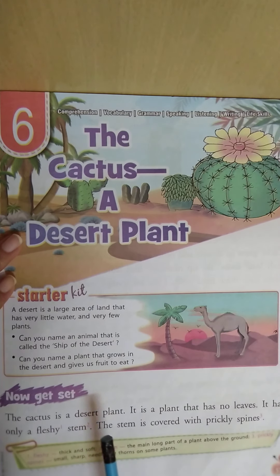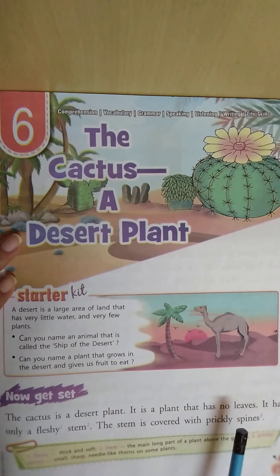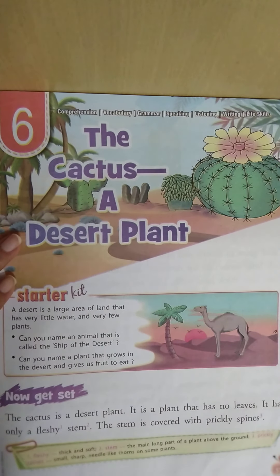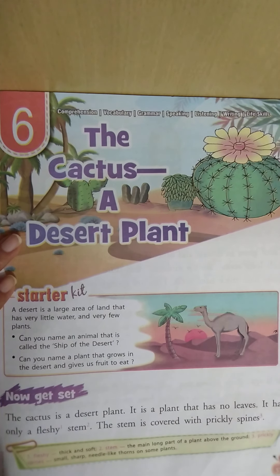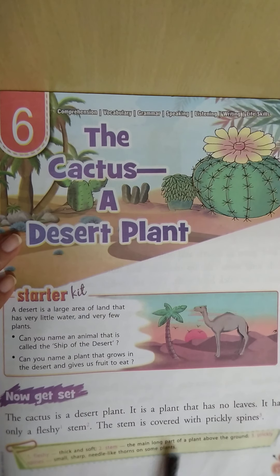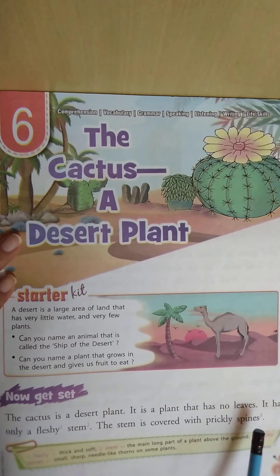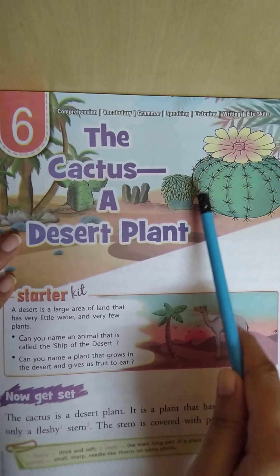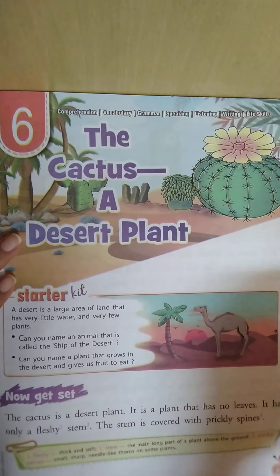The stem is covered with prickly spines. Prickly spine means small, sharp, needle-like thorns planted on some plants. So the stem is completely covered with spines.